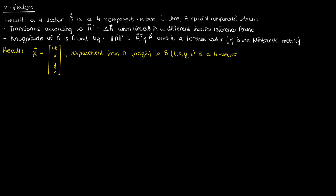Of course, and that's what we'll go over in this video. We'll start with the four vector version of velocity, also known as four velocity. Just like with regular velocity in three dimensions, we can get the four velocity of a particle by taking the time derivative of the displacement four vector. But then we immediately run into trouble: time usually isn't an invariant quantity in special relativity, so which time do we take the derivative with respect to?